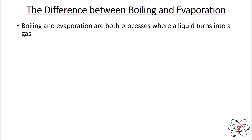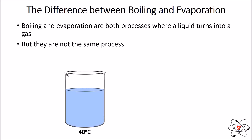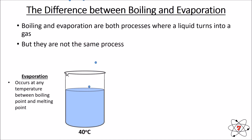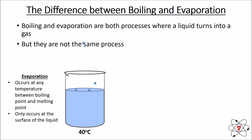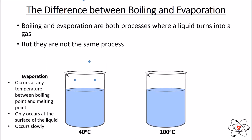Let's look at the difference between evaporation and boiling. They're both processes where a liquid turns into a gas, but they are not the same. If we take a beaker with water in it at 40 degrees Celsius, evaporation is going to occur even though it's below the boiling point. Evaporation occurs at any temperature between boiling point and melting point — for water that's between zero and 100 degrees Celsius. Evaporation only occurs at the surface of a liquid and it's a very slow process.